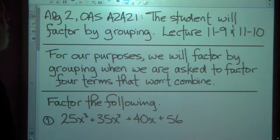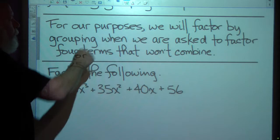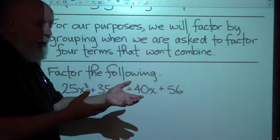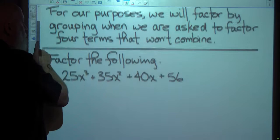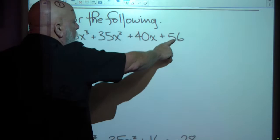All right, looks like we're going to be doing an Albert II OAS 8282-1. The student will factor by grouping, and this is Lecture 9, or 11-9 and 11-10.